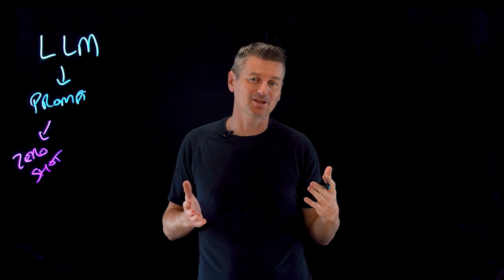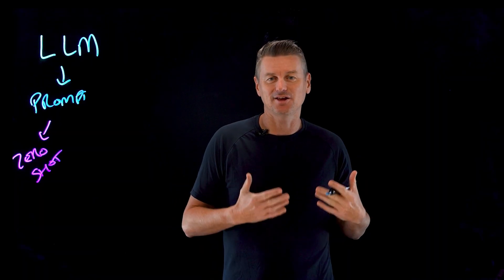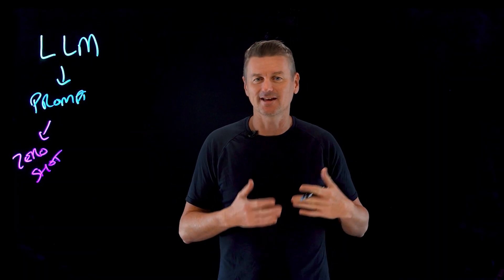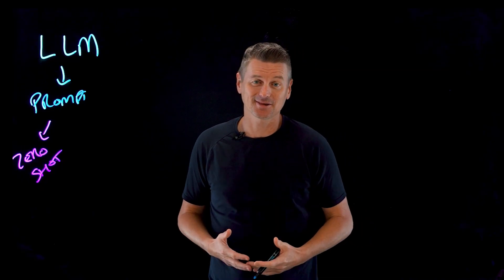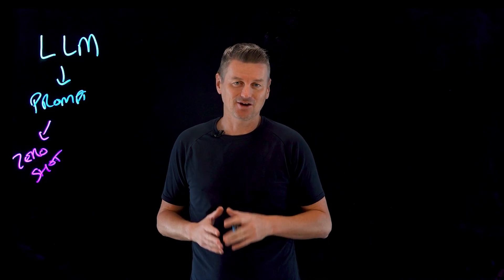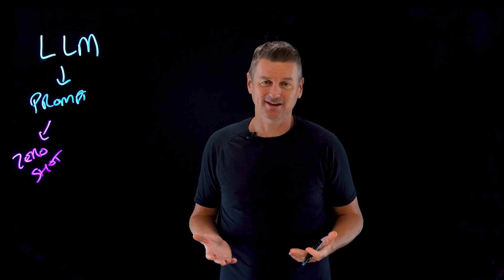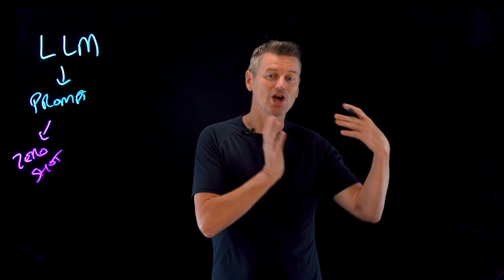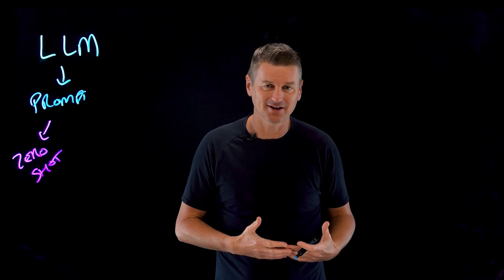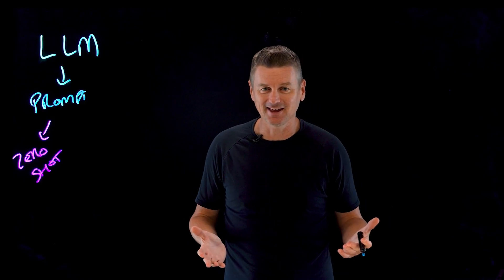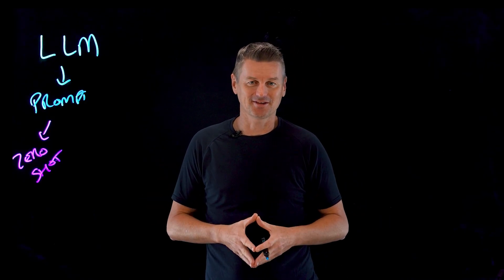With zero-shot prompting, you're providing the model with a single question or instruction without any additional context, examples, or guidance. The model is expected to understand and answer the prompt without that context, relying solely on its pre-existing knowledge and its ability to generalize from that knowledge to generate a relevant and accurate response. And as you can see, it can lead to some sub-optimal responses.